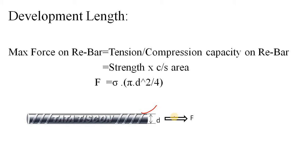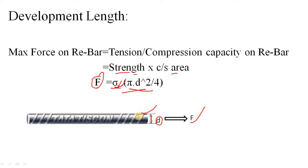The maximum force the bar can carry equals its strength (sigma) into its cross-sectional area. Force equals stress into area; strength is the maximum applicable stress — beyond it, there is no stress. The cross-sectional area for a bar of diameter D is pi D squared by 4. Multiply stress into area and the maximum applied force F is obtained.